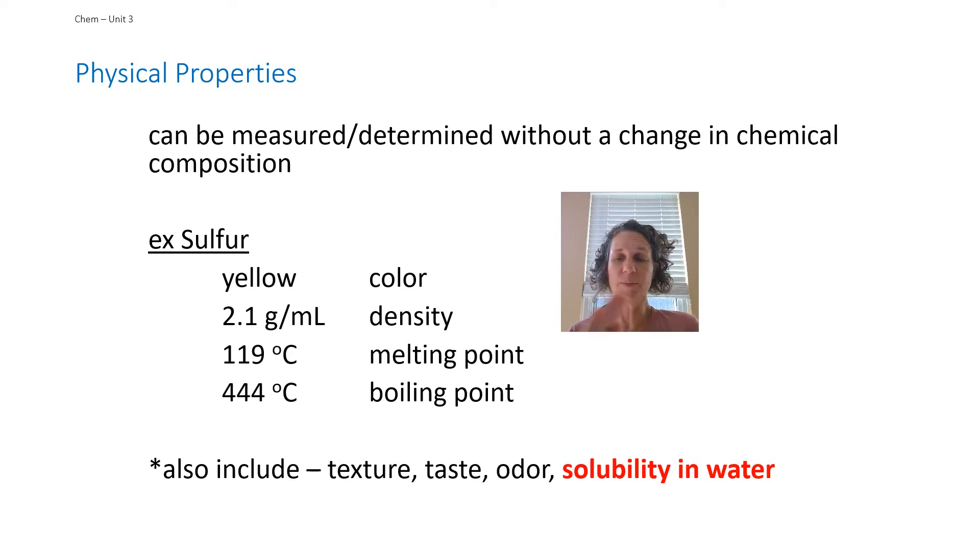Starting with physical properties, these are properties that can be measured or determined without changing the chemical composition. Basically you are for the most part using your five senses to make observations about a substance. For example, sulfur is an element, it's S by the way. If you look at it you would determine that its color is yellow. If you measured it, if you took a block of sulfur and measured the weight of it and then found the volume, you could determine its density.